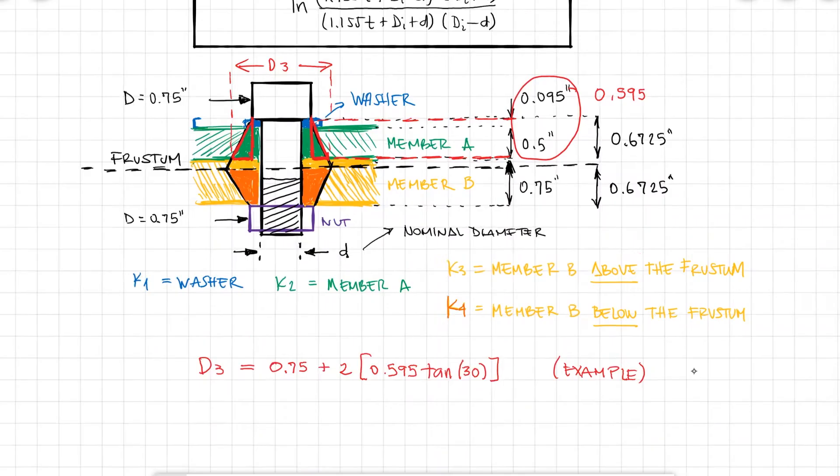Let's look at a full example to see how we use the member stiffness equation. A two inch steel plate and a one inch cast iron plate are compressed with one bolt and nut. The bolt is a 1/2 inch-13 UNC.